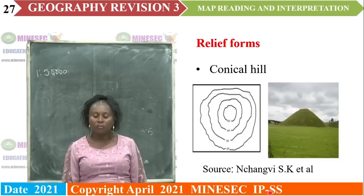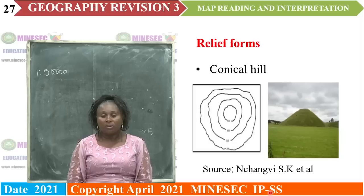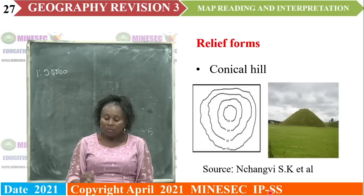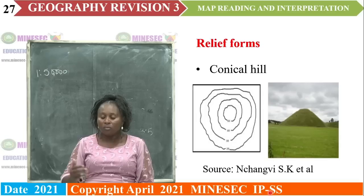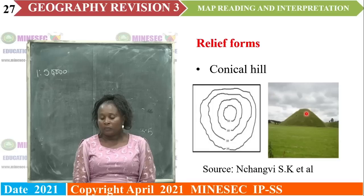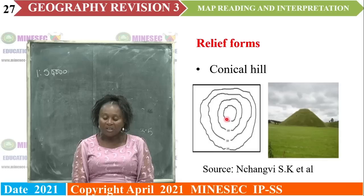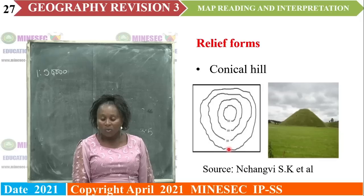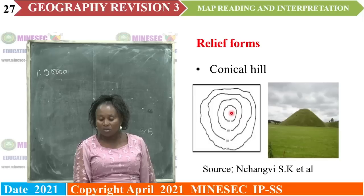Relief forms — there are many different relief forms on the topographic map. How do you identify them? We differentiate and relate them to different landforms by looking at the alignment of the contours. This is a conical hill, also called a round-top hill. It is represented on a topographic map by circular contours whose values are increasing inwards — see how the contour closes up, almost round.